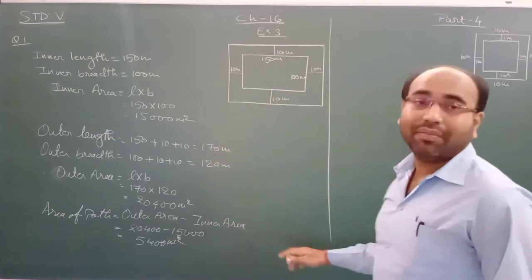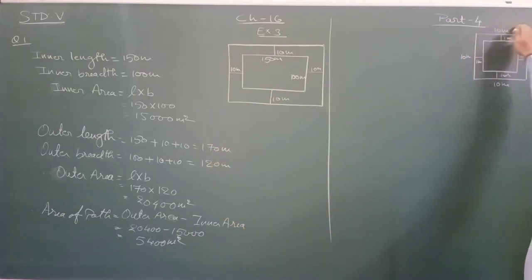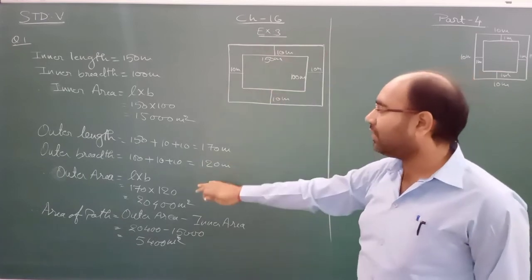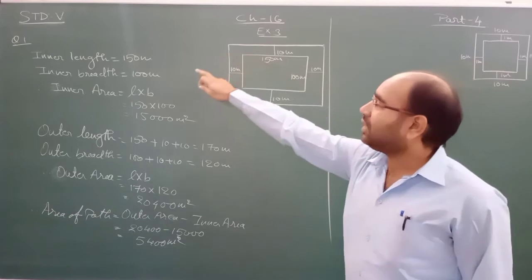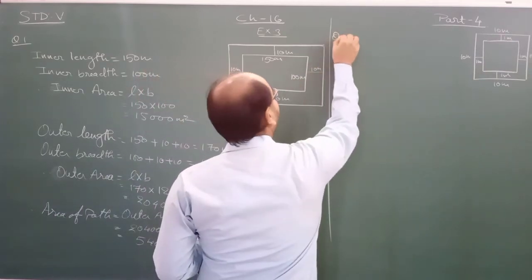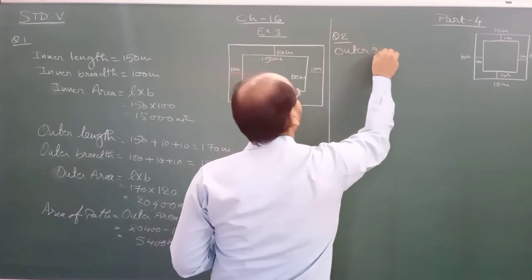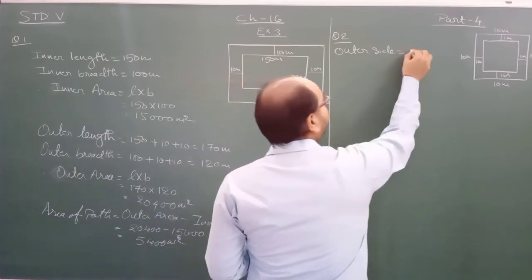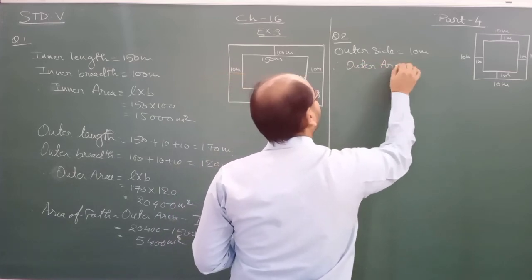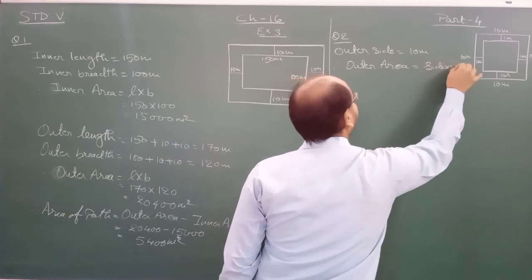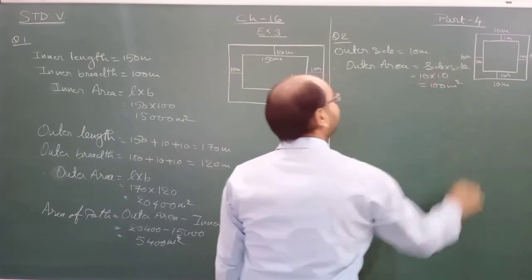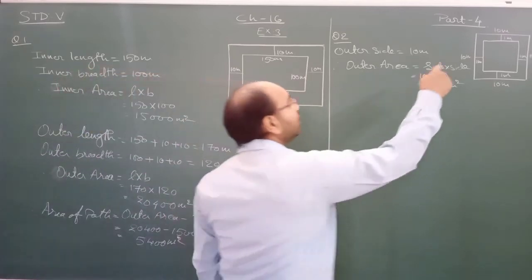Now what is the outer and what is the inner measurement? We will find the outer area first. The outer side is equal to 10 meter — that is the square field itself. So outer area equals side into side, which is 10 into 10, equal to 100 meter square. That is the entire square field area.